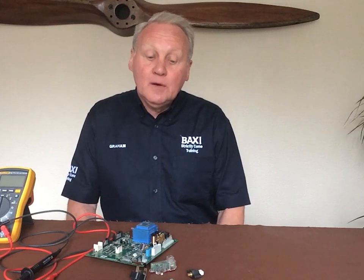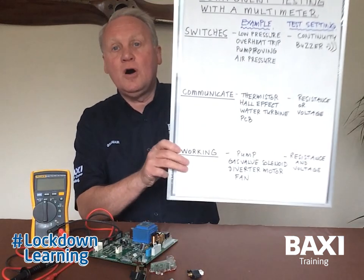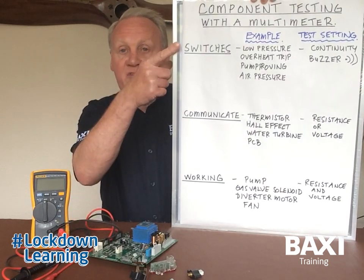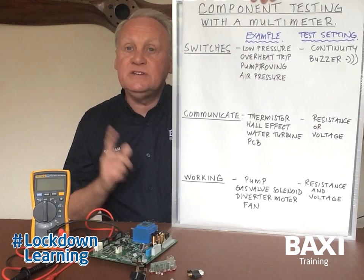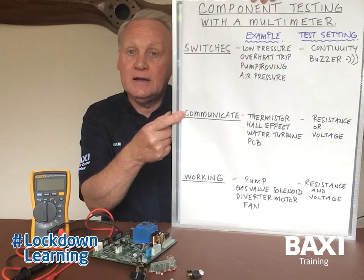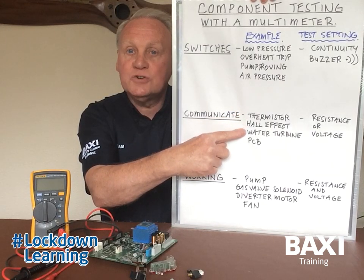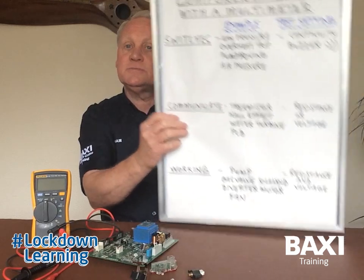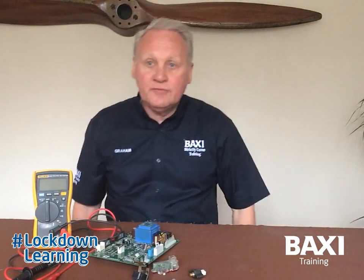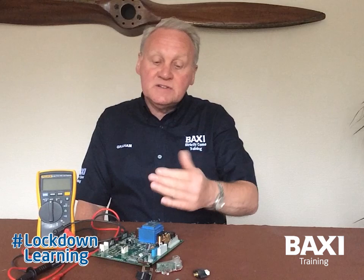Hello, welcome back — welcome to part two of component testing using a multimeter. As we mentioned in part one, we've broken down the electrical components inside the appliance into three types. What we're going to look at today are the components that communicate. Examples include misters, Hall effect sensors, water turbines, and printed circuit boards.